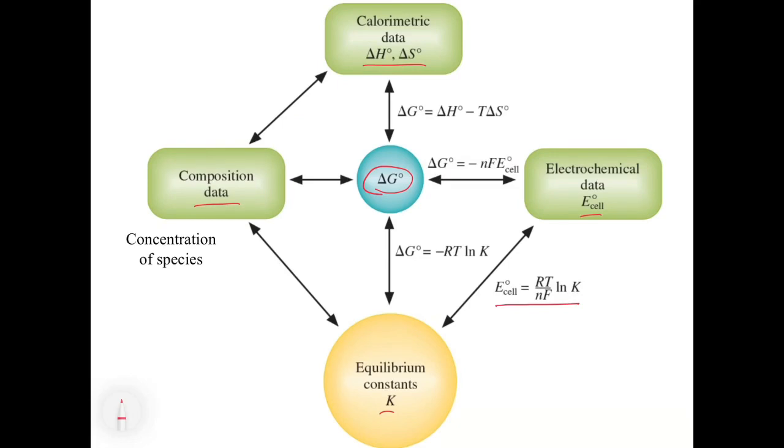But in essence, you can still see that the way these are linked is through this delta G. So going from the electrochemical data to the equilibrium constant is still a delta G link, it's just that we were able to take those two equations and equate them.